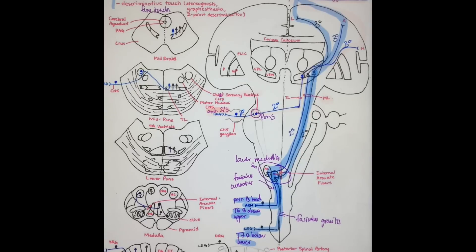Now we're looking at your anterior two-thirds of the head. It has the same endpoint — postcentral gyrus — it's just a little different of a pathway. So we enter through your trigeminal ganglion, and then we synapse almost immediately at your chief sensory nucleus of five, right here in the pons. Then it crosses midline and travels contralaterally through your trigeminal lemniscus, which is right next to your medial lemniscus, and it synapses at your ventroposterior medial, or VPM nucleus of the thalamus, travels through your PLIC, and then synapses at your postcentral gyrus.